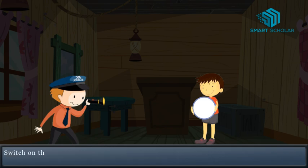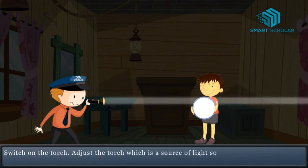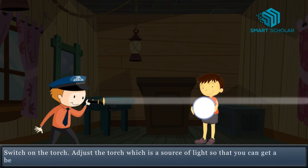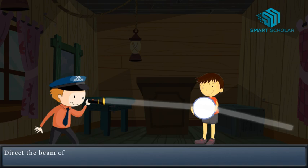Switch on the torch. Adjust the torch which is a source of light so that you can get a beam of light. Direct the beam of the torch light into the mirror that your friend is holding.